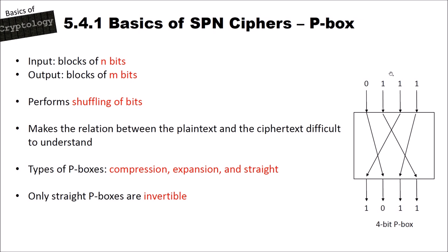There are three types of P-boxes: compression (more inputs than outputs, e.g. four inputs and two outputs), expansion (fewer inputs than outputs, e.g. two inputs and four outputs), and straight (same number of inputs and outputs, e.g. a 4×4 P-box). Only straight P-boxes are invertible.